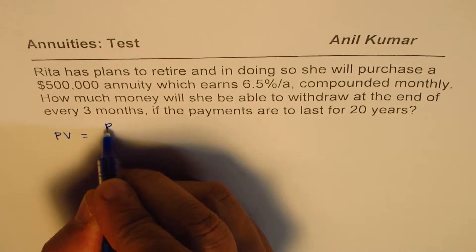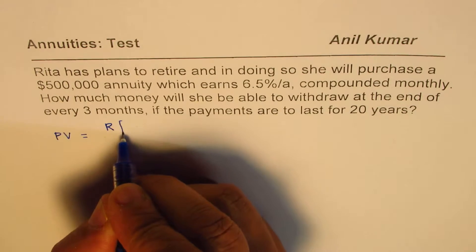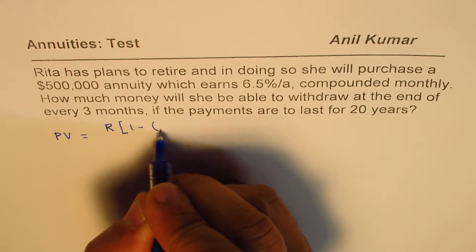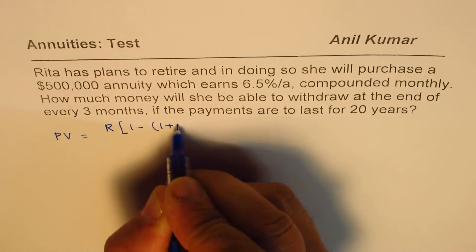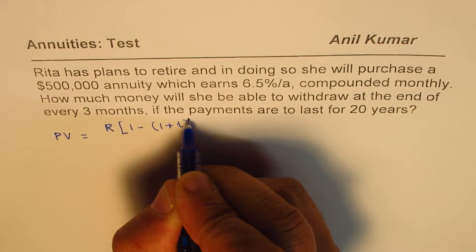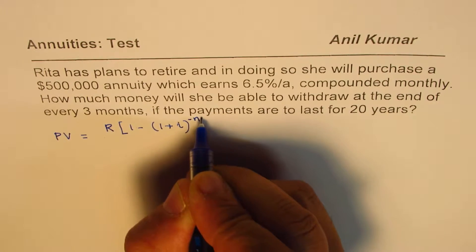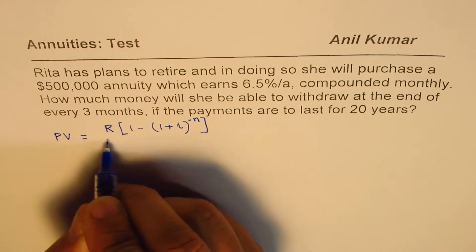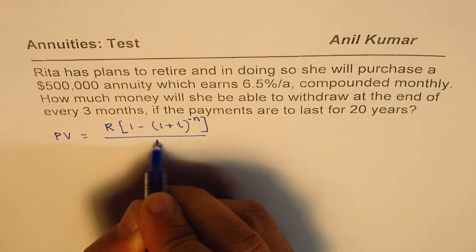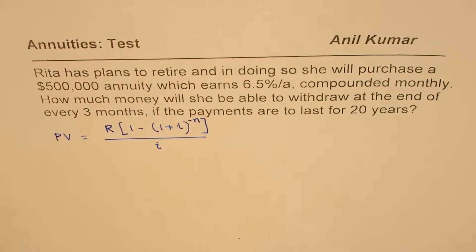So let's write down the formula for present value annuity. It is: regular payments times 1 minus (1 plus i) to the power of minus n, divided by i. That's the formula we are going to use.